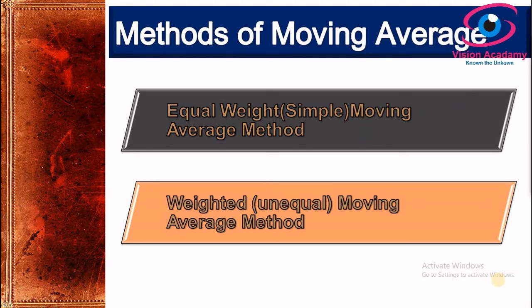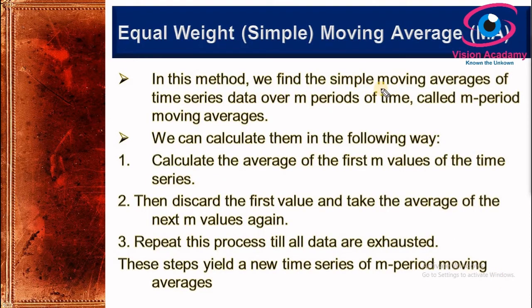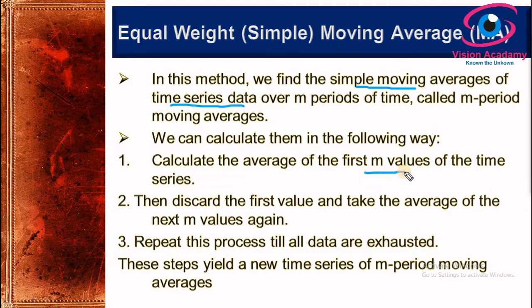In this video I am going to explain the equal weight or simple moving average method. In this method we simply find the simple moving averages of the time series data over m periods. This is also called m-period moving averages. To calculate it, we first find the average of the first m values, where m might be three years.